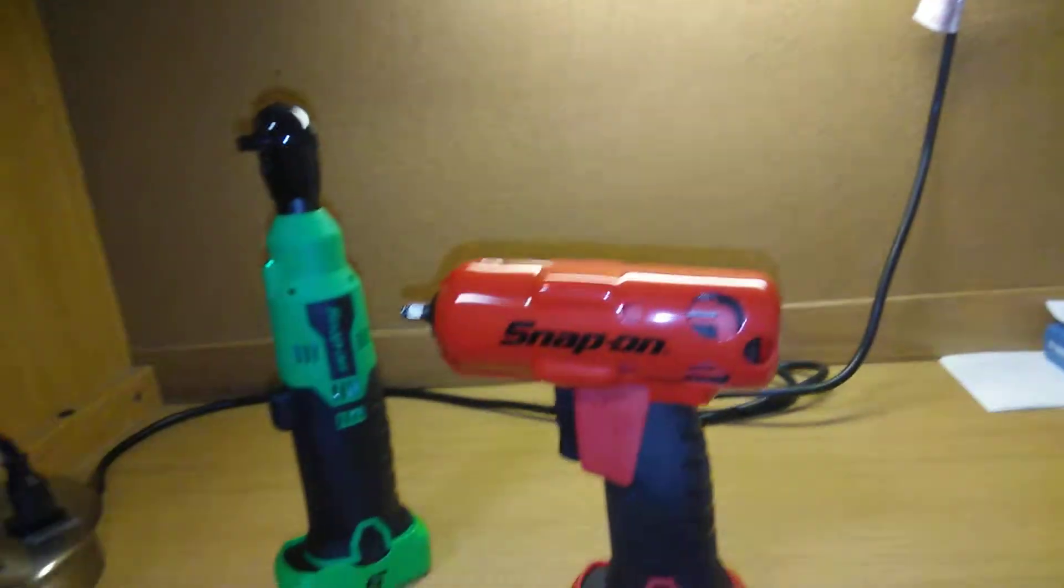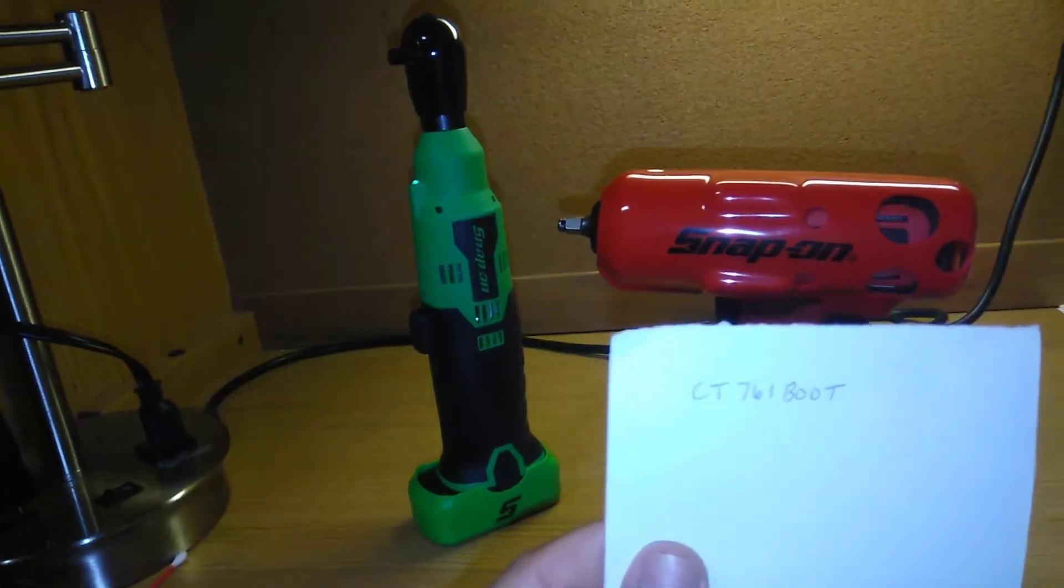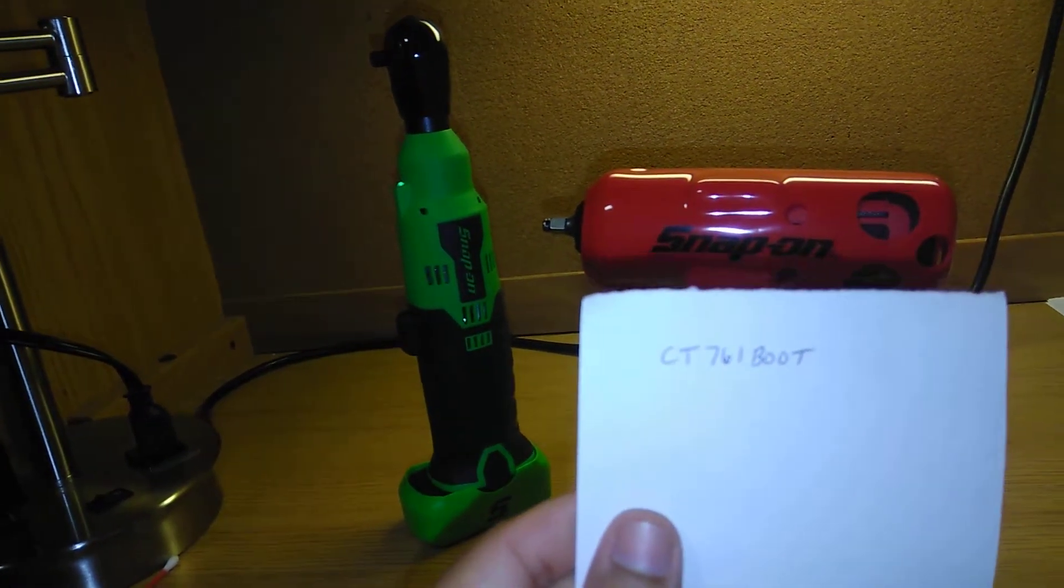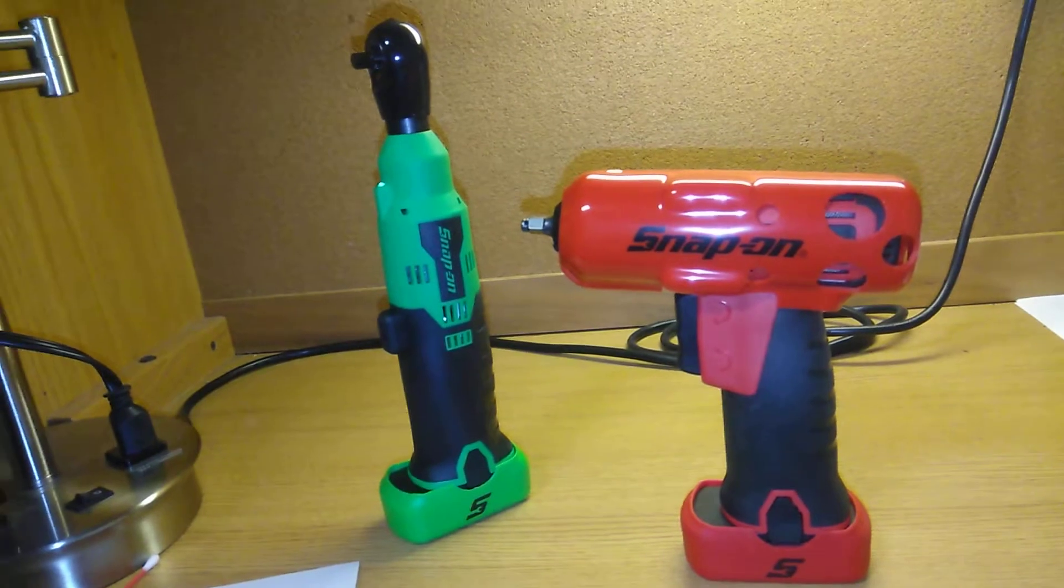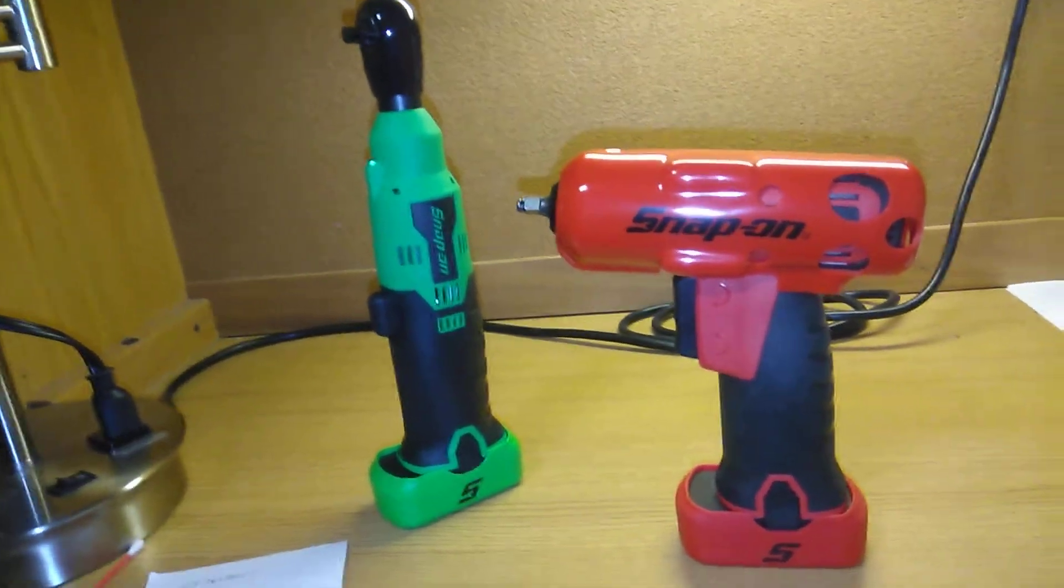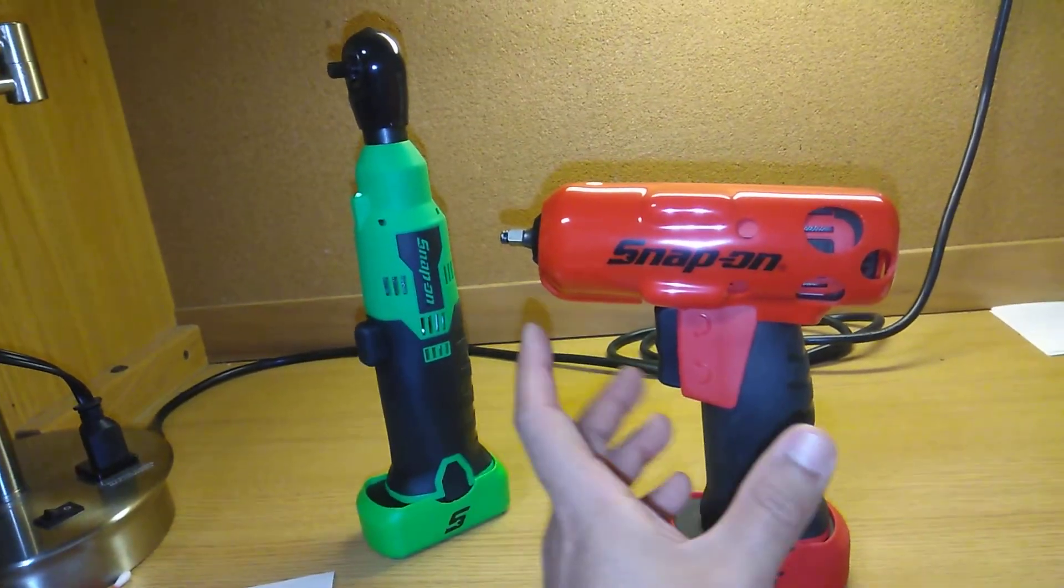The part number for that is the CT761 boot. So if any of you guys actually have the three eighths model, that would be the part number for that. Just see what color they have available.